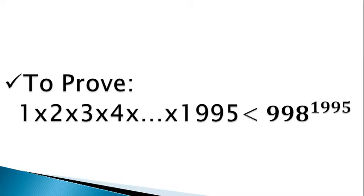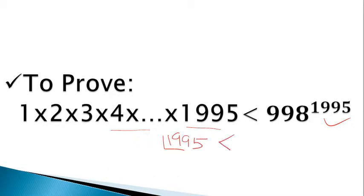Hello friends, welcome to Maths Online Classes. In this video I will be telling you how to prove this question. We need to prove that the multiplication of 1 × 2 × 3 × 4 and so on up to 1995 — that is, 1995 factorial — is less than 998 to the power 1995.